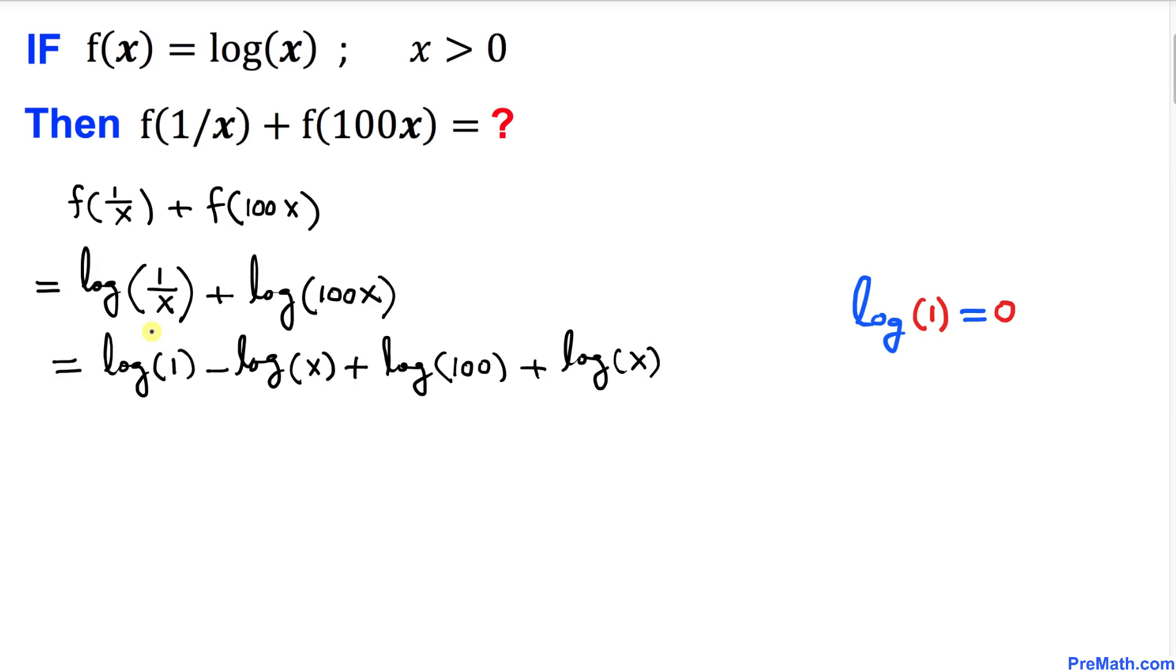Let's simplify. We know log(1) equals 0. The negative log(x) and positive log(x) cancel each other out, leaving us with log(100).